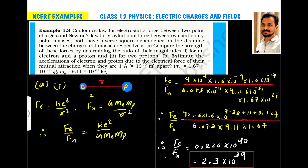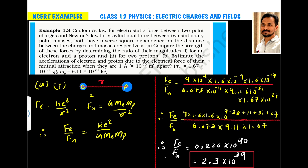Example 1.3. Coulomb's law of electrostatic force between two point charges and Newton's law for gravitational force between two stationary point masses both have inverse square dependency on the distance. The electrostatic force is given by KQ₁Q₂/R², and similarly the gravitational force is given by GM_eM_p/R². In both cases, the force is proportional to 1/R².